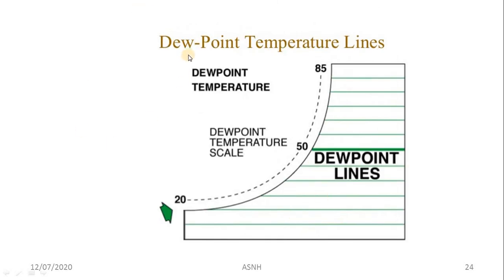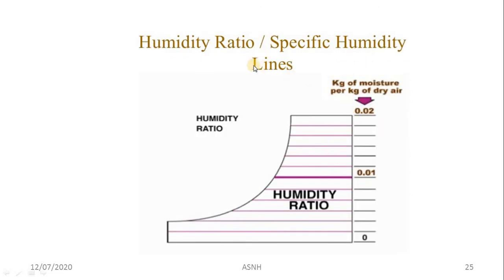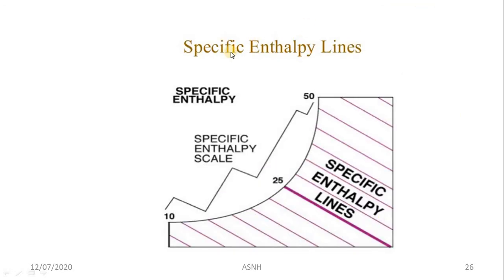The dew point temperature lines are equidistant horizontal lines on the psychrometric chart. The humidity ratio (specific humidity) lines are also equidistant horizontal lines on the y-axis of the psychrometric chart.